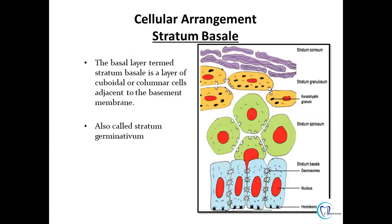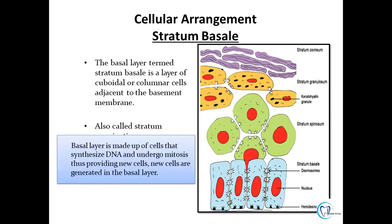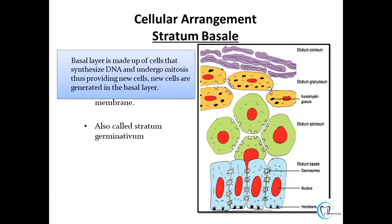Stratum basale, also known as the basal layer, comprises cuboidal to columnar cells adjacent to the basement membrane. The basement membrane demarcates the epithelium from the connective tissue — it is an extracellular matrix derived from components of both epithelial and connective tissue. The basal layer is connected to the connective tissue with the help of this basement membrane. It is also known as stratum germinativum because cells here synthesize DNA and undergo mitosis — this is the dividing cell layer.